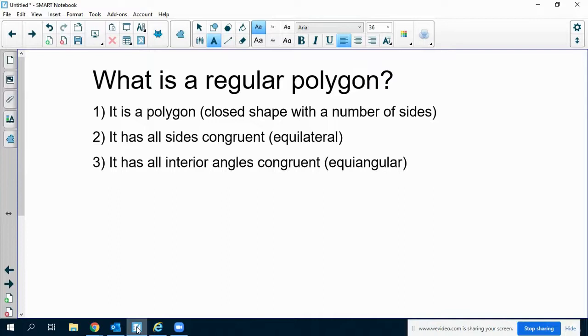You may be asking, what is a regular polygon? Well, it's a polygon that has a closed shape with a number of sides. It has all sides congruent, it's equilateral, and it has all interior angles congruent, so it's equiangular.